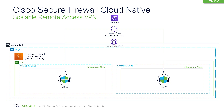Let's look at our first use case, which is a scalable architecture for RA VPN with Route 53. In this architecture you can see that I have multiple enforcement points managed by an EKS cluster, and in addition to that I have Route 53, and on that Route 53 I have VPN.mydomain.com as my hosted zone.